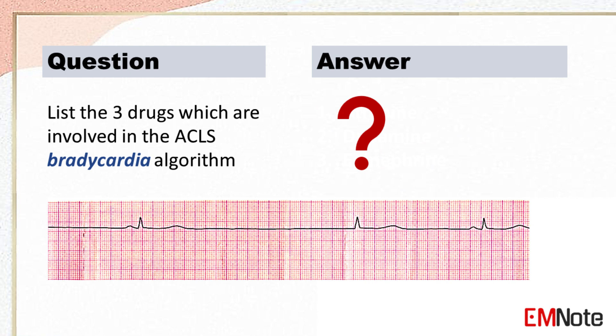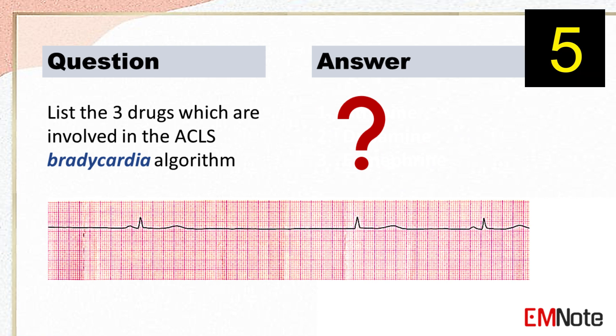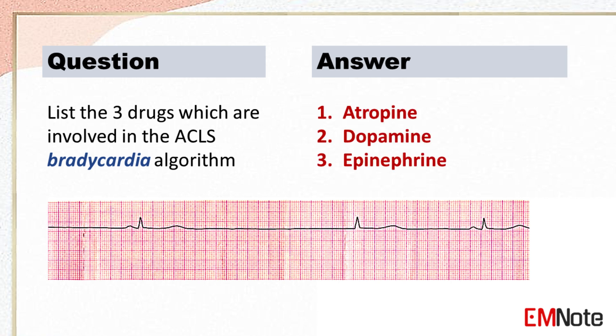List the three drugs involved in the ACLS bradycardia algorithm. The three drugs are: atropine boluses, dopamine infusion, and epinephrine infusion.